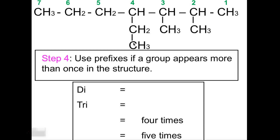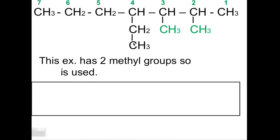So now we are going to use prefix if a group appears more than once in the structure. So di is going to be for twice. Tri is going to be for three times. Tetra is four times. And penta is five times. So this example has two methyl groups. So the prefix di is going to be used. So when we name this, we're going to use dimethyl.